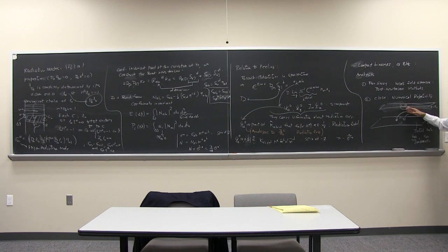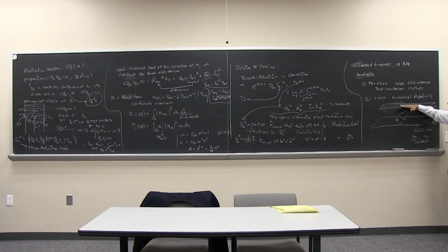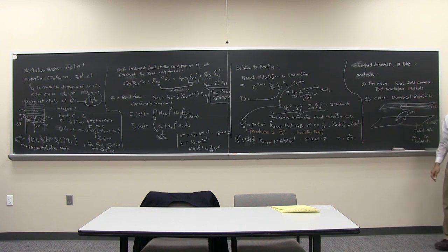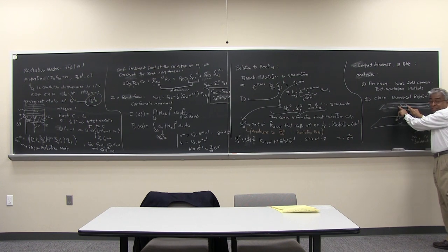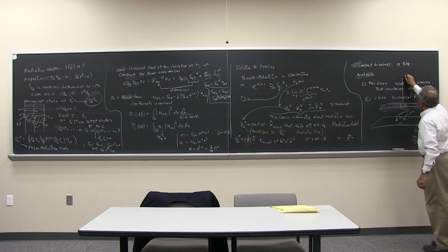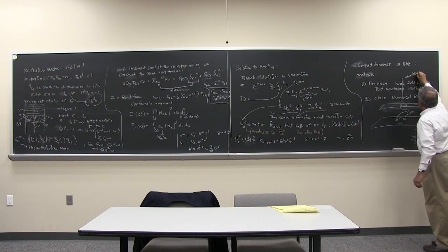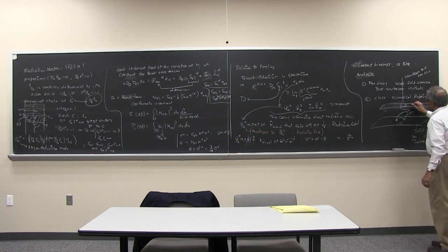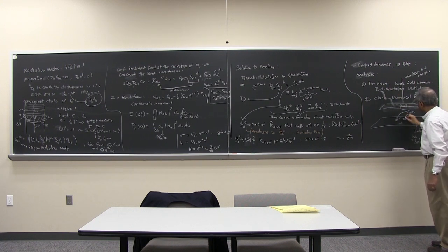Numerical relativity is needed somewhat before the common horizon actually forms. The common horizon settles down, and then there is a lot of radiation emitted in this region, just when the common horizon is formed and the black holes have merged. Then these black holes settle down finally to a Kerr black hole with radiation going out. Here in the beginning the radiation is weak; now the radiation is strong.